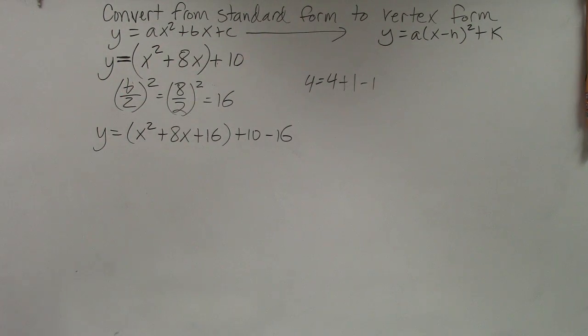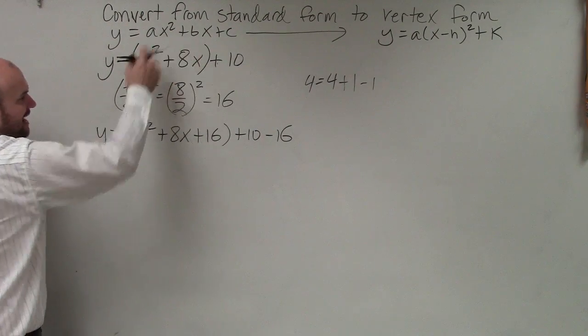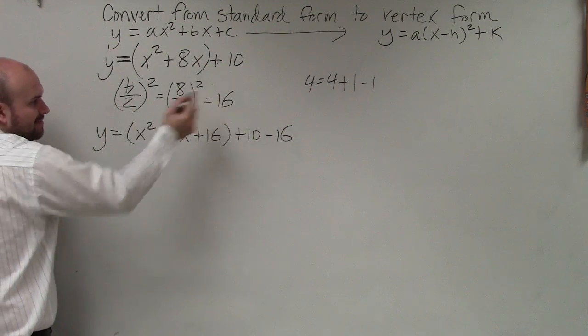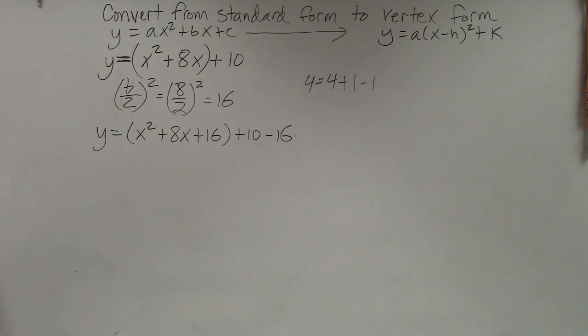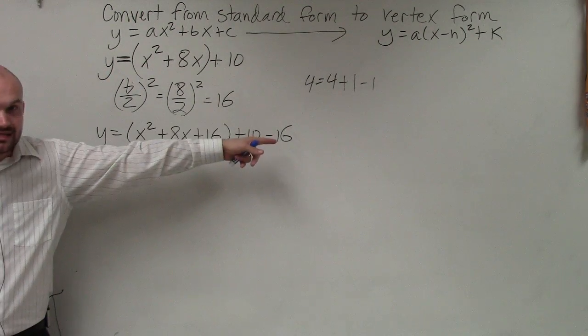So the important thing is what we have done, I have not mathematically done anything to change. All I have simply done is I grouped the first two terms. I took b divided by 2 squared to give me 16. I added 16 and subtracted 16 into the equation. The equation is still exactly the same.